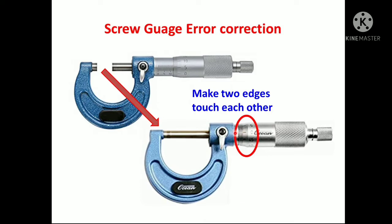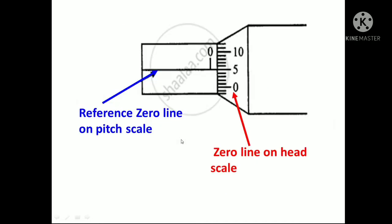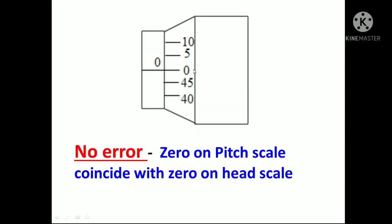When these two edges touch each other, the zero reading on the head scale should coincide with the zero reading on the pitch scale. If the zero line on the pitch scale and zero line on the head scale coincide with each other, then this screw gauge gives you a perfect answer. There is no error, and you can take measurements directly.